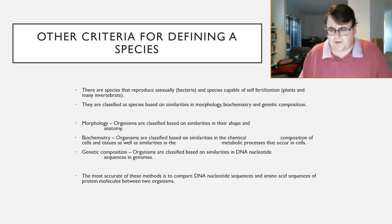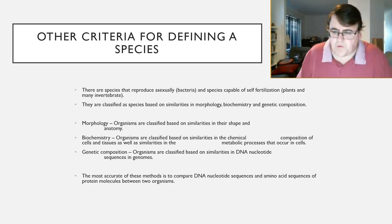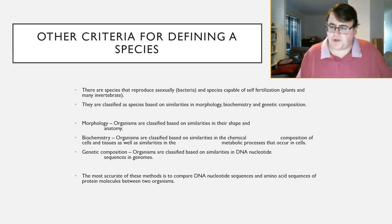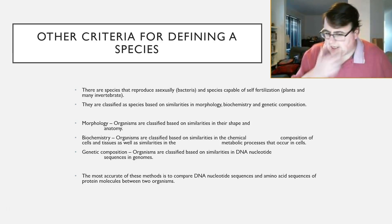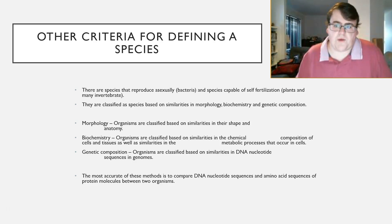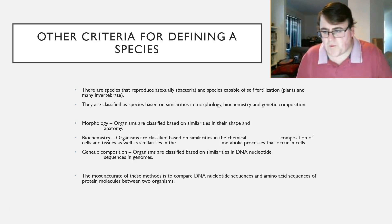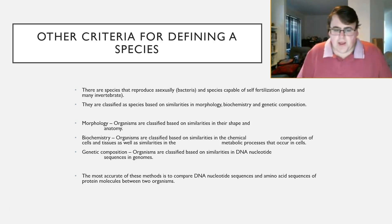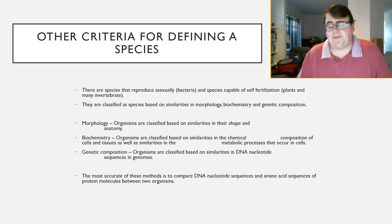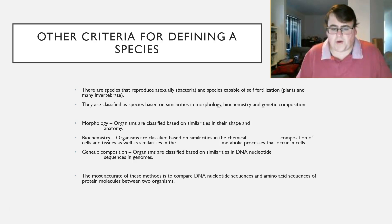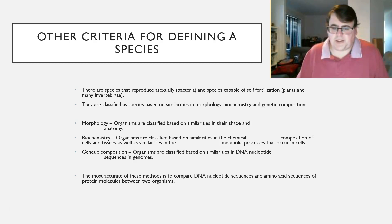If a mule can't reproduce, then technically it doesn't fit under that species category — so a mule can't be a species, yet we know the mule is a species. So there must be other ways of defining species. For example, morphology: we classify species based on the similarities in their shape and anatomy. We know all mules have a very similar shape and their anatomy is the same as each other.